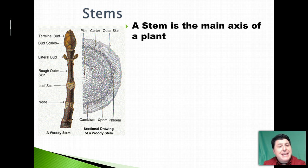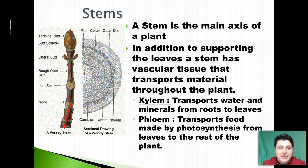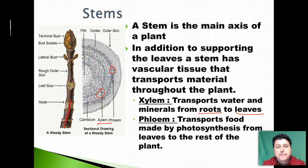The stem makes up the main axis of a plant. In addition to supporting the leaves, a stem is going to have vascular tissue — veins — which allow material to be transported throughout the plant. Going through the stem is a series of veins. We have xylem, which transports water and minerals from the roots to the leaves because the leaves need water to do photosynthesis. The phloem then takes the food made by photosynthesis from the leaves back down to the rest of the plant.